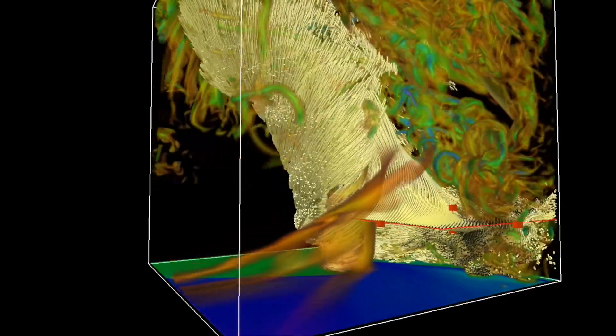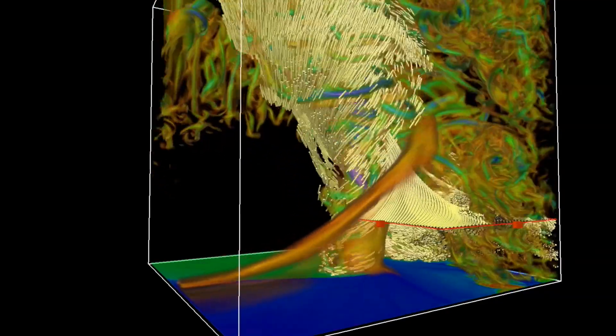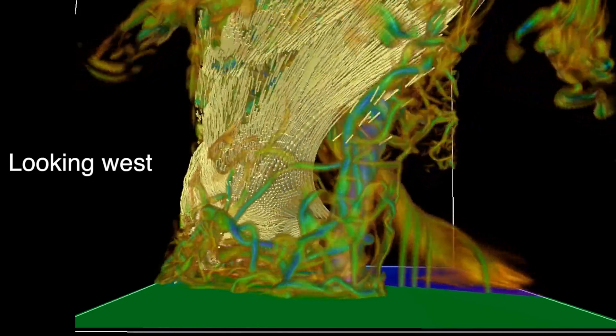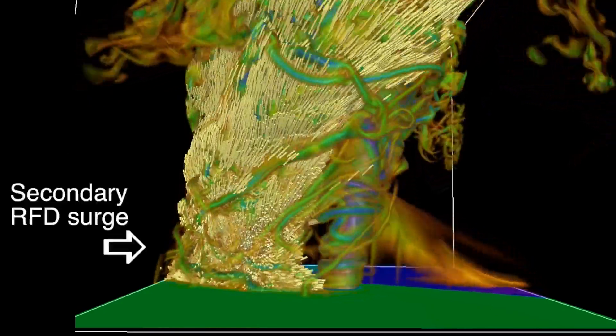Here is that ribbon of vorticity that you can see is feeding the storm aloft, but it's not directly interfacing with the tornado. We see these things in storms called secondary RFD surges, where the storm just kind of blasts out a new blast of air that ends up getting into the updraft. And this visualization shows that quite well.